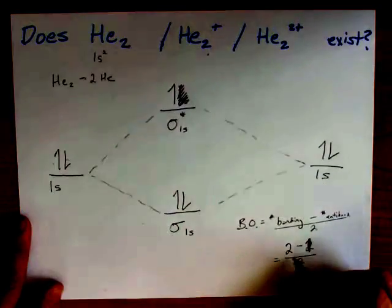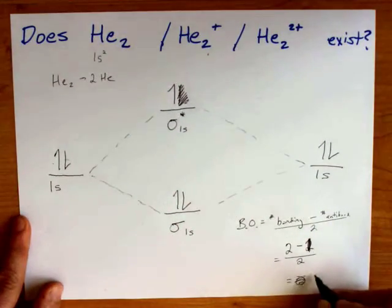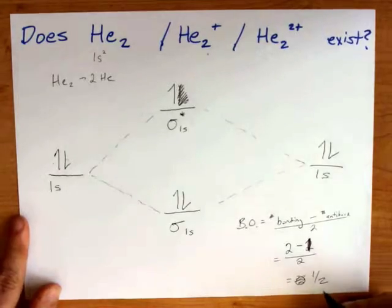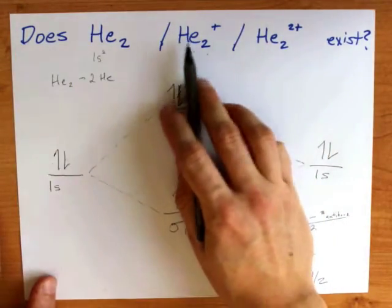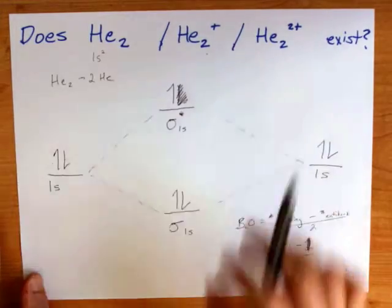2 minus 1 divided by 2 is a bond order of a half. That's about a half covalent bond between the two heliums, which is still not stable.